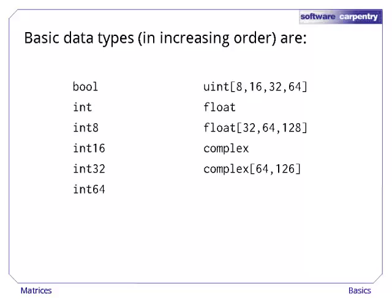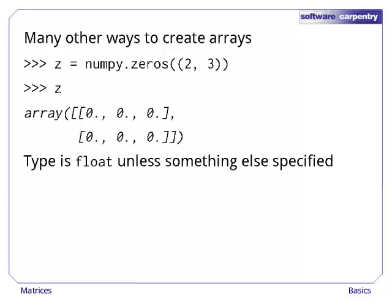NumPy provides many basic numerical data types. Note that int, float, and complex are whatever the underlying hardware uses as its native type. This will usually be 32 or 64-bit, but 128-bit machines are becoming common. Note also that uint is an unsigned integer, i.e. all the bits are used for magnitude, but negative values cannot be represented. There are many other ways to create arrays beside calling array.